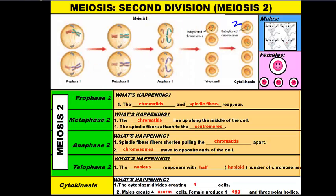This is how meiosis creates sperm cells and egg cells. That concludes our vodcast on meiosis — thank you for your time, and I hope that was helpful.